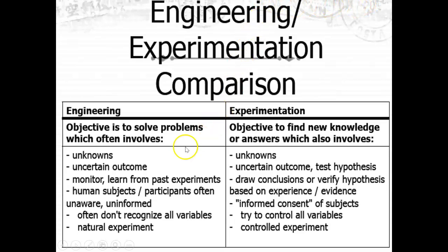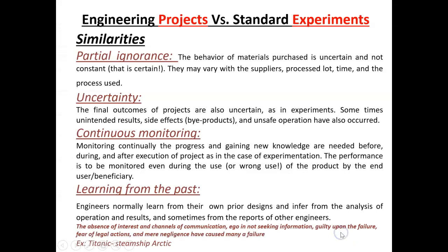Here you can consider engineering and experimentation as a comparison chart. Engineering's objective is to solve problems which often involve unknowns and uncertain outcomes. Experimentation's objective is to find new knowledge or answers which solve an unknown and uncertain outcome, test a hypothesis, draw conclusions, and verify the hypothesis. Experimentation involves informed consent, whereas engineering involves uninformed consent of the subjects. It tries to control all the variables — it is a controlled experiment.